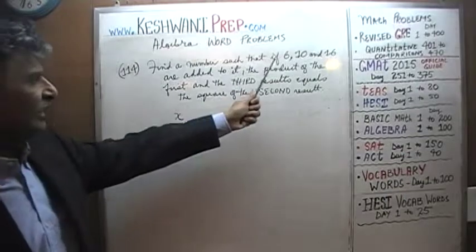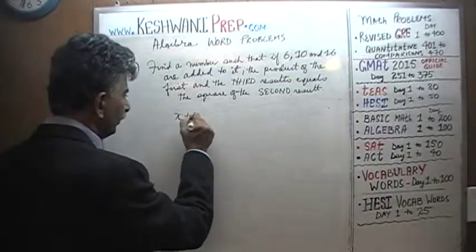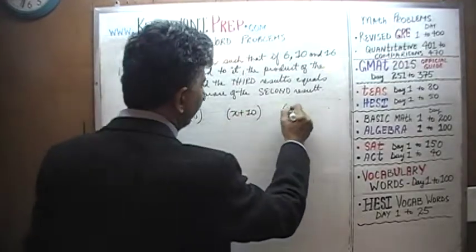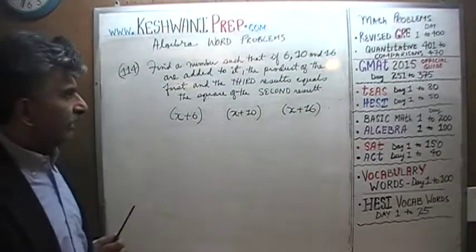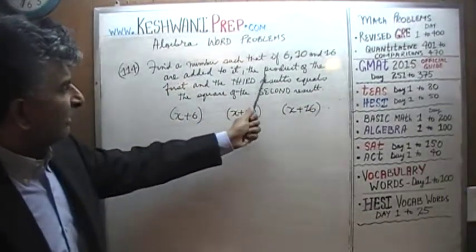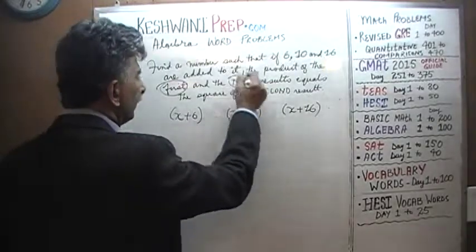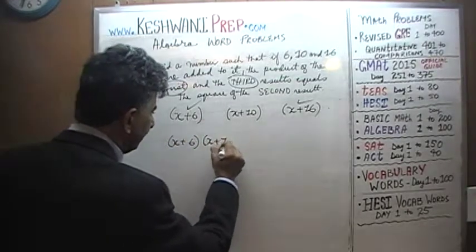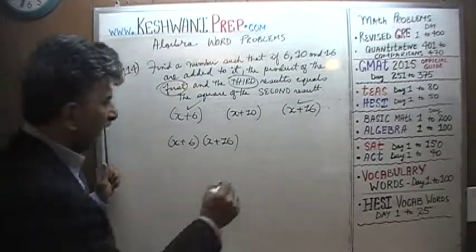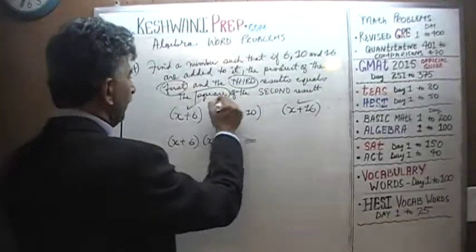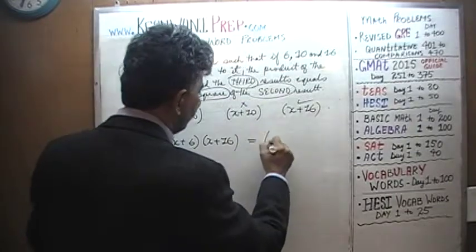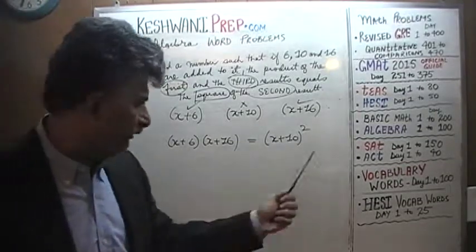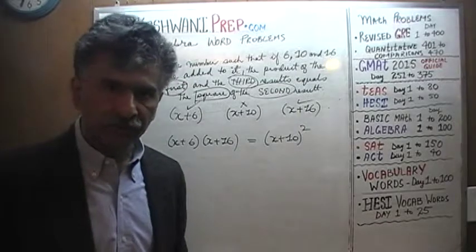One more time. We're going to take the number X, add 6 to it — that's the first result — add 10 to it — that's the second result — and add 16 to it — that's the third result. The product of the first and the third: (x+6) times (x+16), has to equal the square of the second: (x+10) squared. There is your equation. We simply have to solve it.